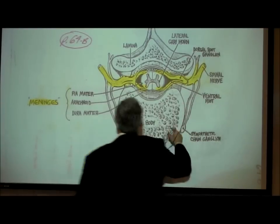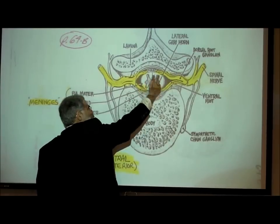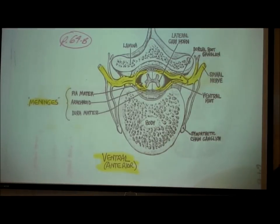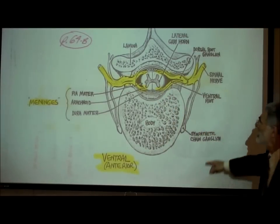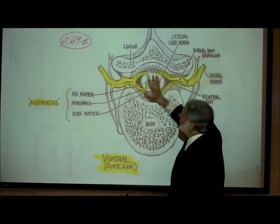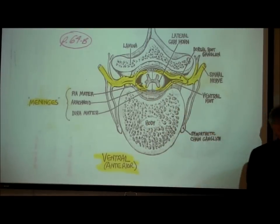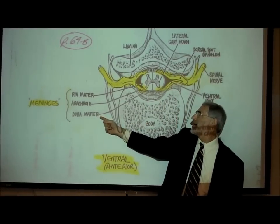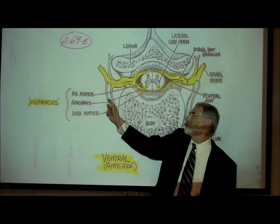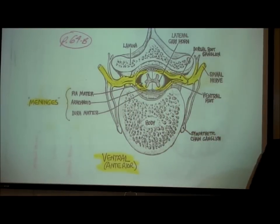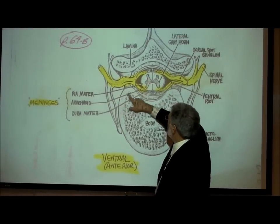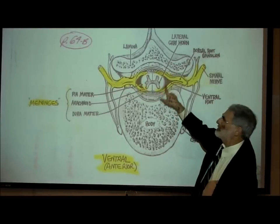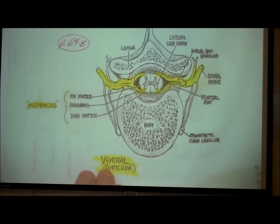The gray matter in the spinal cord has the shape of a letter H, or like a butterfly, surrounded by white matter. Surrounding both the spinal cord and brain are three meninges: the outermost is the dura mater, the middle is the arachnoid membrane, and the innermost is the pia mater. The space between the arachnoid and pia mater is filled with cerebrospinal fluid — the subarachnoid space.